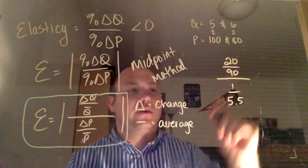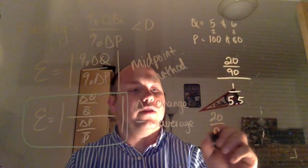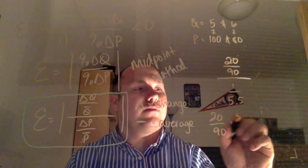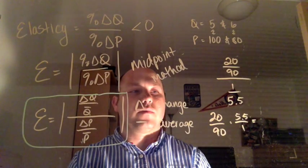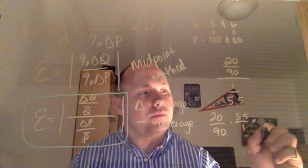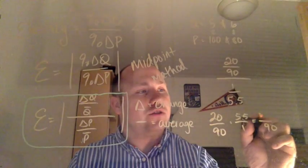What we can do is take that flip the fraction, right? So we have 20 over 90 times 5.5 over 1, right? And at this point, what we get is 120.